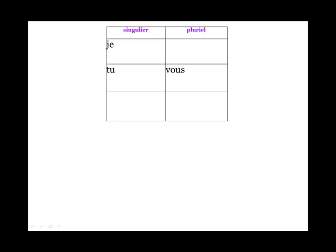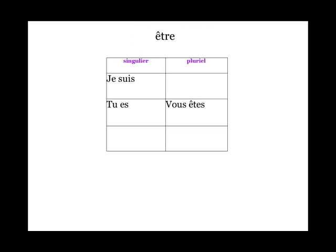Now we'll get back to those pronouns and take a second look at them — je, tu, vous. It's now logical to look at the verb être, which means 'to be.' It's one of the most common verbs. We have the same structure, and we'll look at the forms for those pronouns we just discussed. So we have: je suis, tu es, vous êtes.